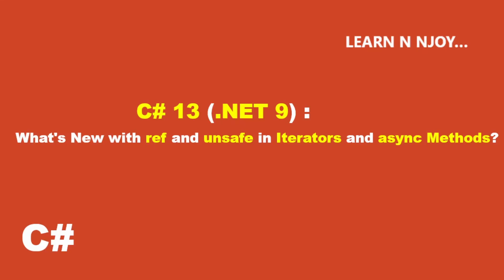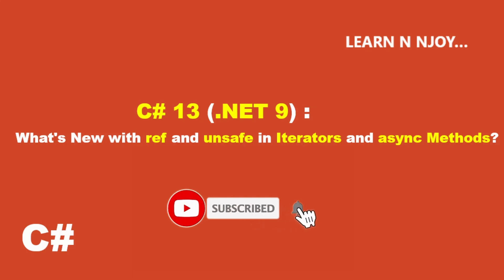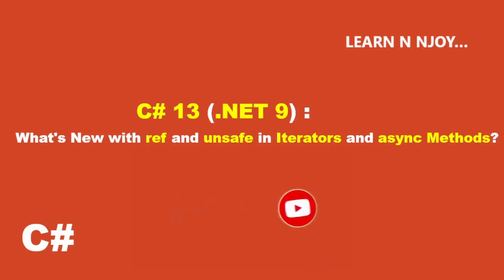Hello friends, welcome back to our channel. Today we are diving into something super interesting: what's new in C# 13 with ref and unsafe in iterators and async methods. I'm going to keep it simple and to the point. Just a quick reminder to subscribe to my channel, hit the like button, and don't forget to click on the little bell icon so you'll be notified every time I upload a new video. Without any further delay, let's get started.